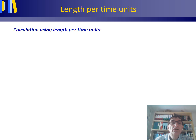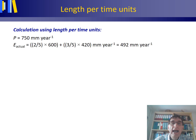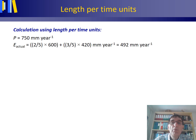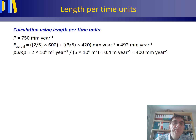We could have solved this exercise much more quickly by using length per time units. Precipitation is already a length per time unit: 750 mm per year. The actual evaporation for the whole polder is found as the weighted average of open water evaporation and evaporation from the land part. Open water is two-fifths of the total area and the land part is three-fifths, so two-fifths times the open water evaporation plus three-fifths times the land evaporation gives 492 mm per year. For pumping discharge, divide by the total area of the polder and you get 400 mm per year.